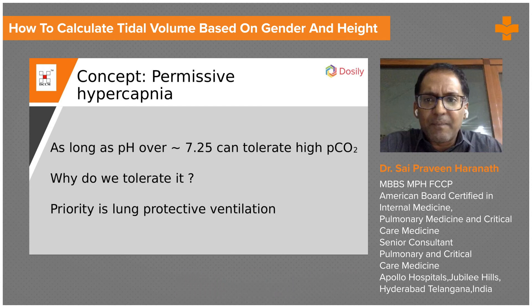You also have a situation where carbon dioxide goes up because you're not able to blow it out. Carbon dioxide is an acid; normal blood pH is 7.4. As carbon dioxide keeps going up, pH keeps coming down. When it comes down to about 7.25, you can tolerate it up to that point, but beyond that you cannot and must adjust breathing. To get carbon dioxide out — this is ventilation — you use tidal volume times respiratory rate. Tidal volume is 6 to 8 ml per kg ideal body weight: a five-foot male is 50 kg, five-foot female is 45.5 kg.